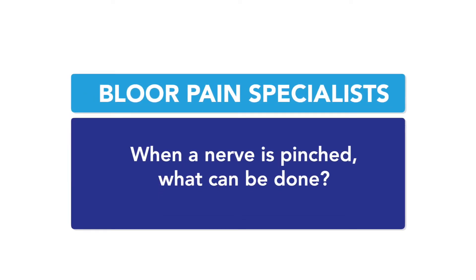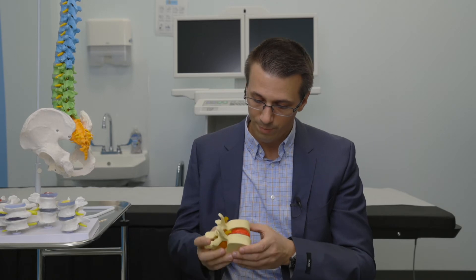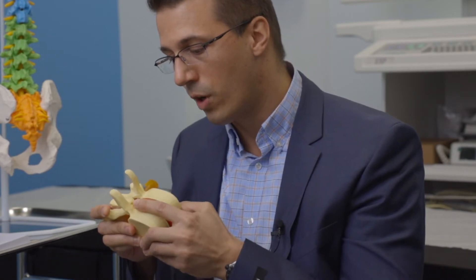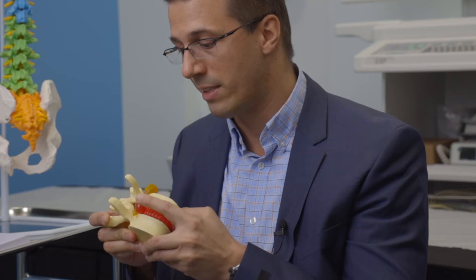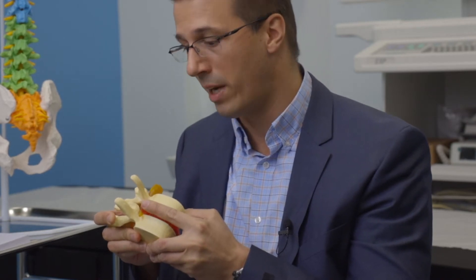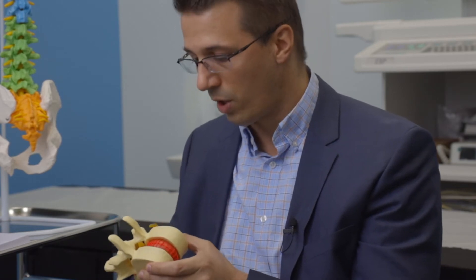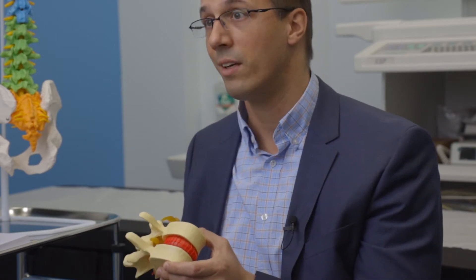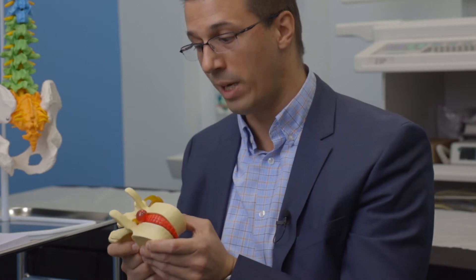When a nerve is pinched, what can be done? Oftentimes a nerve is pinched because a disc herniates and causes pressure on the nerve passing by. If that disc herniation is external, coming out of the spine, we can put a corticosteroid right on top of that bulging disc — like a fire extinguisher — to reduce the inflammation and shrink the swelling. That can cause a really big bulge to become a smaller bulge that's not bothering the nerve leaving at that space.